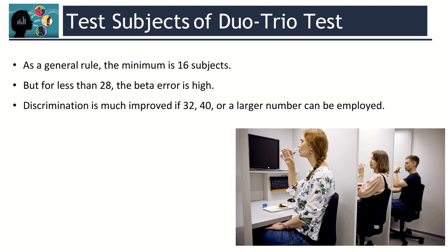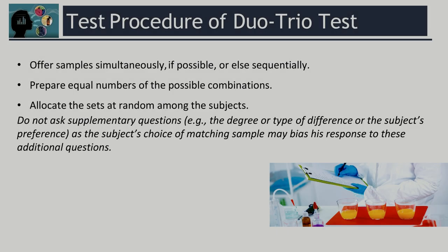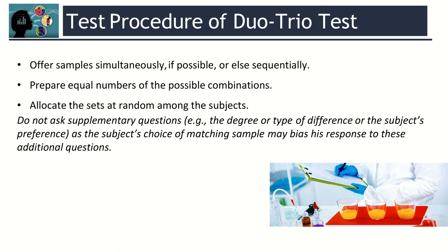As a general rule, the minimum is 16 subjects, but for less than 28, the beta error is high. Discrimination is much improved if 32, 40, or a larger number of subjects can be employed. Also, offer samples simultaneously if possible, or else sequentially. Prepare equal numbers of possible combinations and allocate the sets at random among the subjects. Do not ask supplementary questions, e.g., the degree or type of difference or the subject's preference, as the subject's choice of matching samples may bias his response to these additional questions.